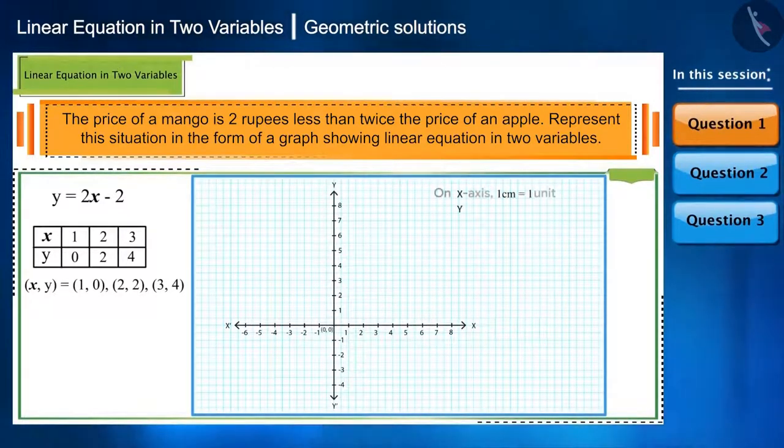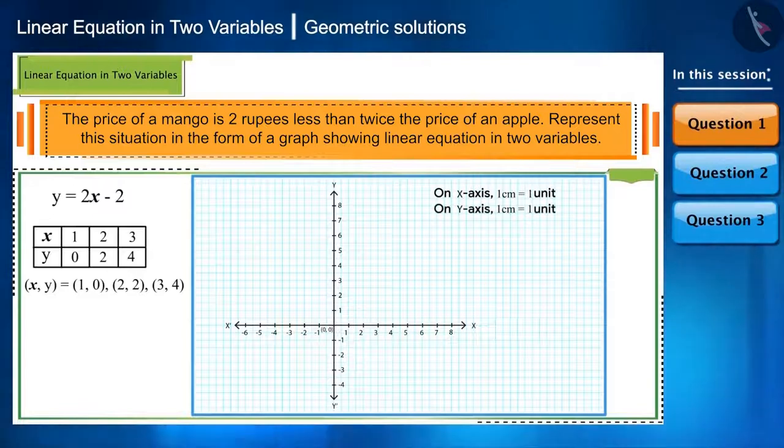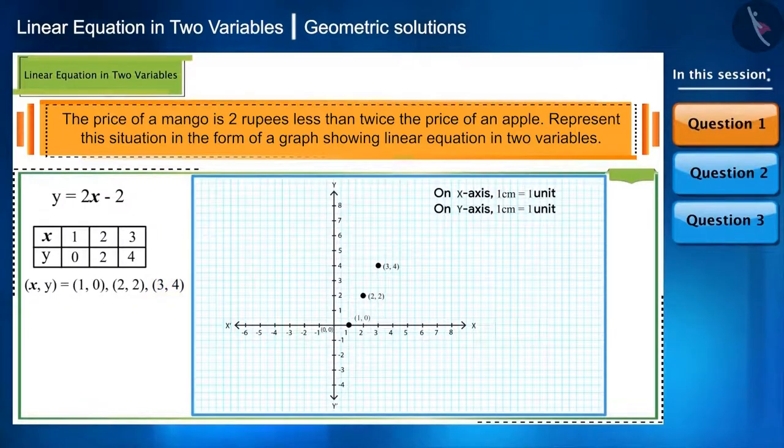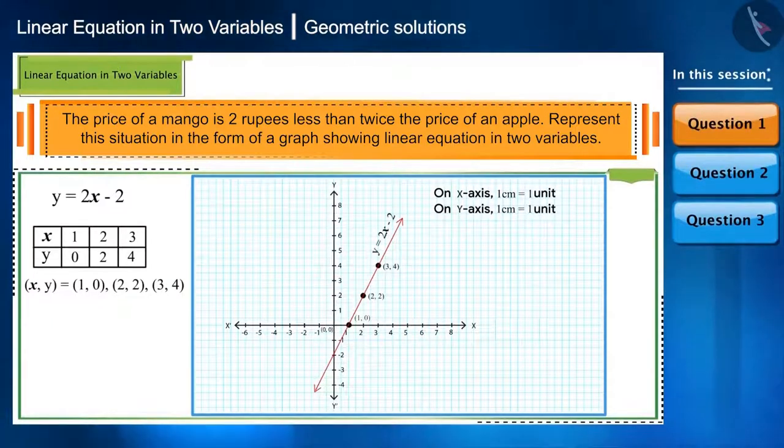First, mark the units on x and y axis. Plot all three coordinate points. Now draw a line through these points. And this will be the graph of the equation y is equal to 2x minus 2.